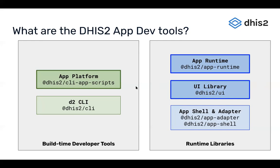On the right side, we have some runtime libraries. We have the App Runtime, which basically provides a set of tools for communicating with the DHIS2 API as well as for doing standard things in a DHIS2 application. One that we'll talk about in the next workshop is alerts — any component can create an alert that shows up as a snack bar in your application in a standardized way. Right now you can use it to query data from DHIS2 as well as perform mutations to modify data, similarly to how you would interact with the REST API today.